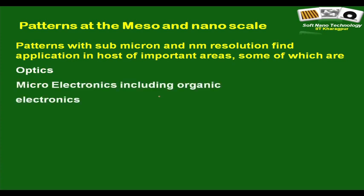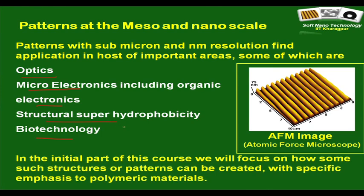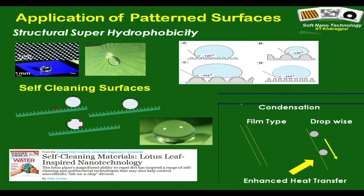The initial part of the course will focus largely on how to make these types of surface structures or nano patterns. Let us go through some examples of applications of patterned surfaces. One well-known example is a drop of water that almost rolls down the surface of a lotus leaf like a marble, which is attributed to the presence of surface structures.